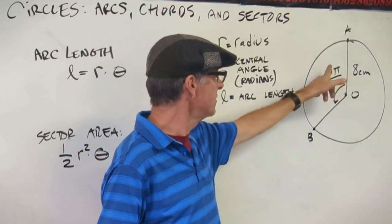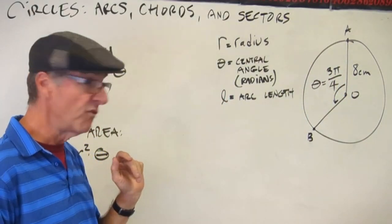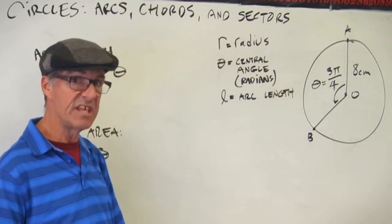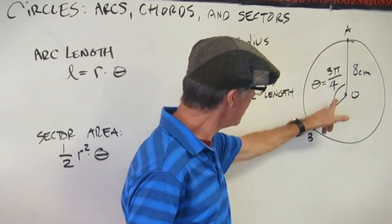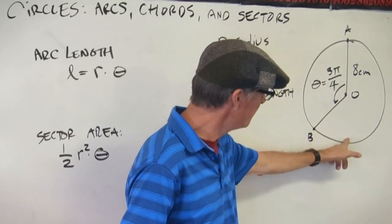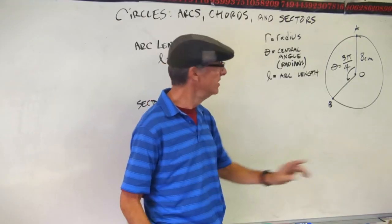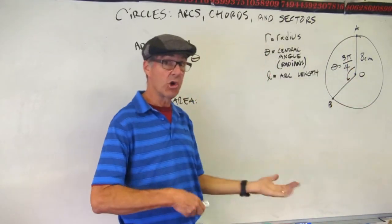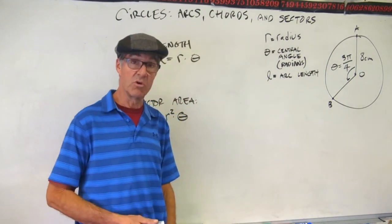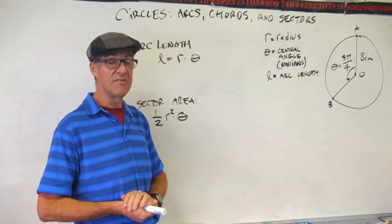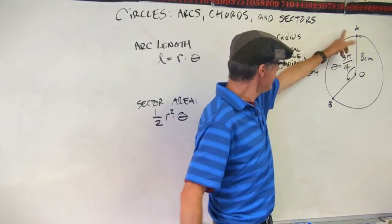Pause the video for a second and think about 3π over 4 in this diagram. How is that reasonable? Check this out. If I were to go all the way around to here, halfway around the circle, that would be 180 degrees, which is π radians. So 3π over 4 is three-quarters of π radians, which kind of makes sense. This doesn't look like all the way around. It looks like, yeah, that could be three-quarters of the way around.